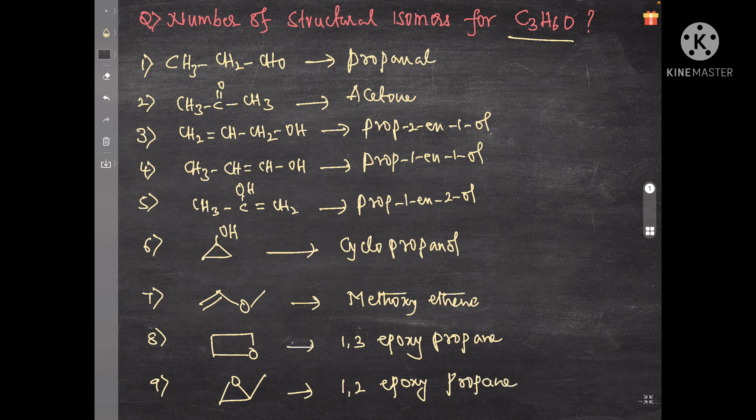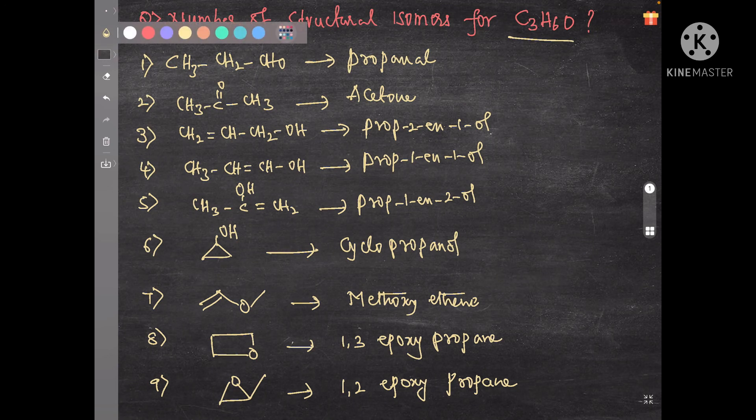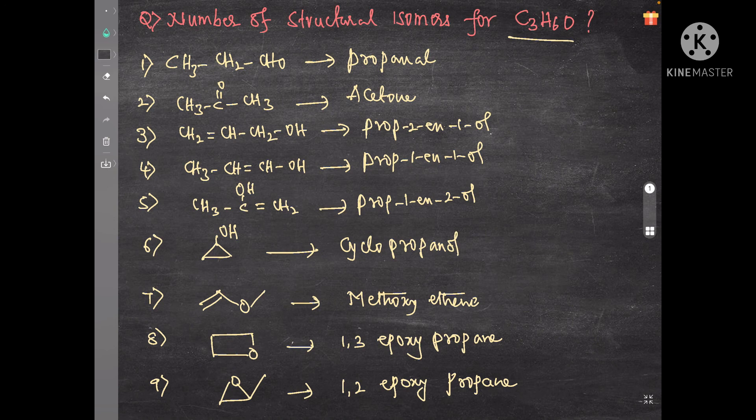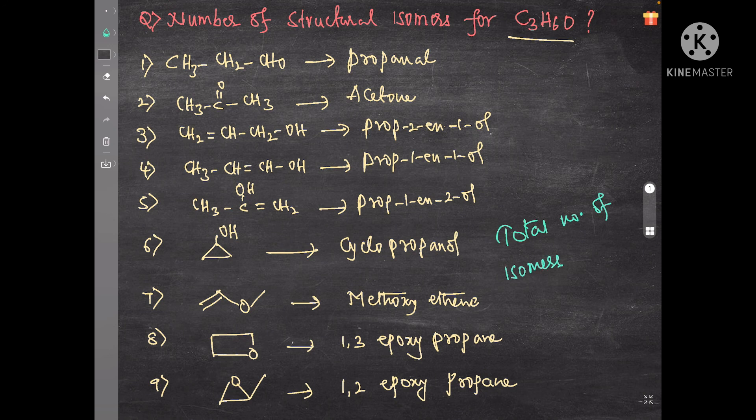So these are the possible number of structural isomers for molecular formula C3H6O. Total number of isomers equals to nine. Thank you.